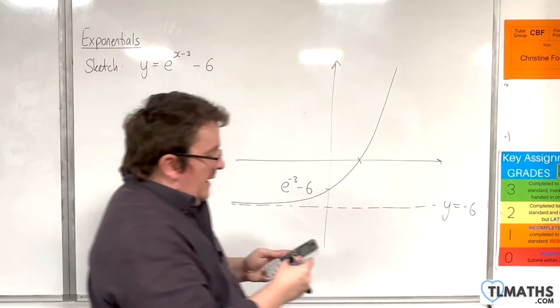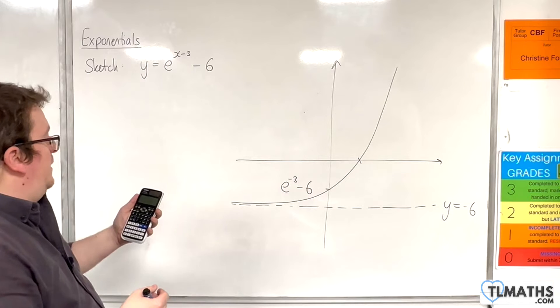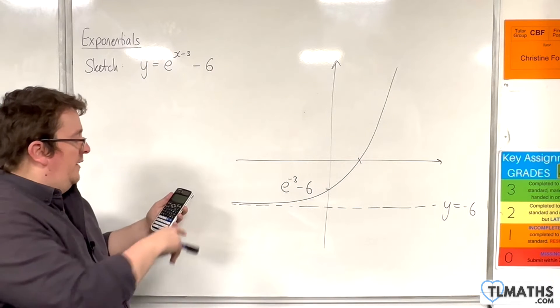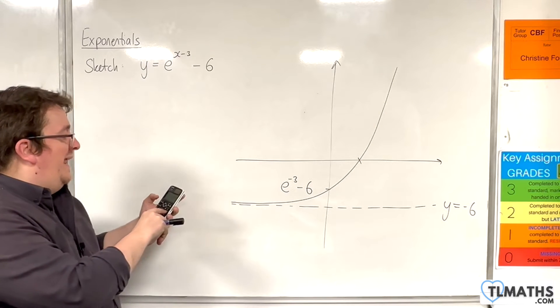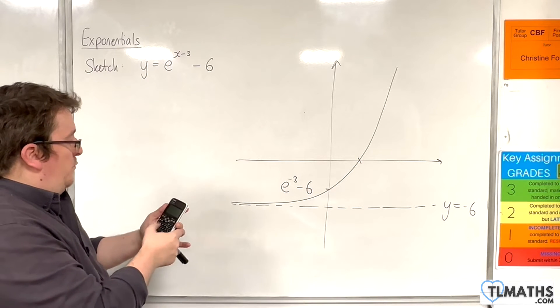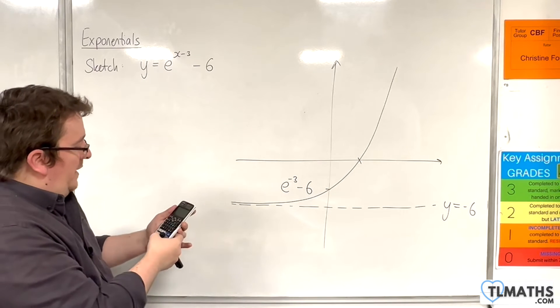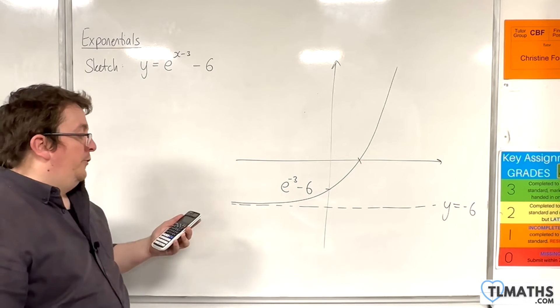You could plug it into your calculator. The e button on the ClassWiz, the FX901EX, is on the right-hand side in yellow. So, you've got to press Shift, then the LN button, and then minus 3, and then take away 6. And you should get minus 5.95.